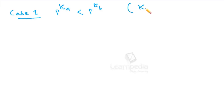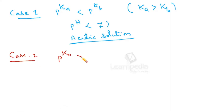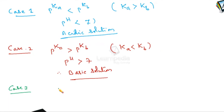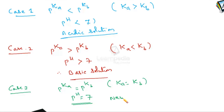Case 1: if pKA is less than pKB (meaning KA is greater than KB, i.e., the acid is stronger than the base), then the solution will have pH less than 7 and is acidic. Case 2: if pKA is greater than pKB (meaning KA is less than KB, i.e., the base is stronger), the solution will have pH greater than 7 and is basic. Case 3: if pKA equals pKB (meaning KA equals KB, the relative strengths are equal, as seen with ammonium acetate), then the solution will have pH 7 and is neutral.